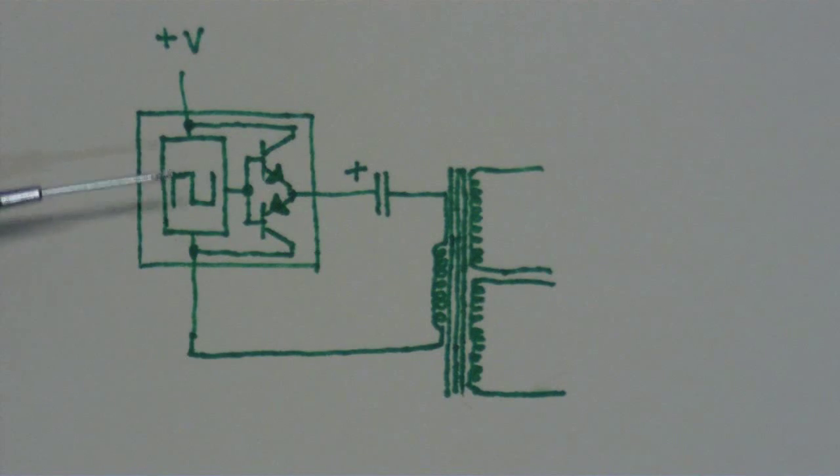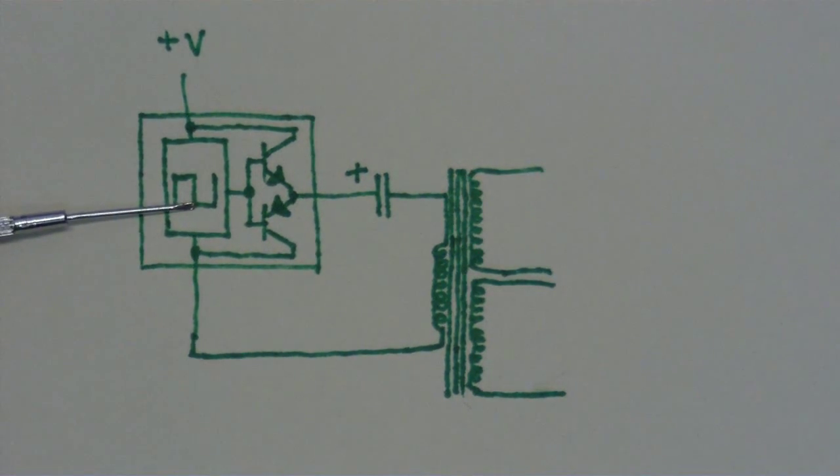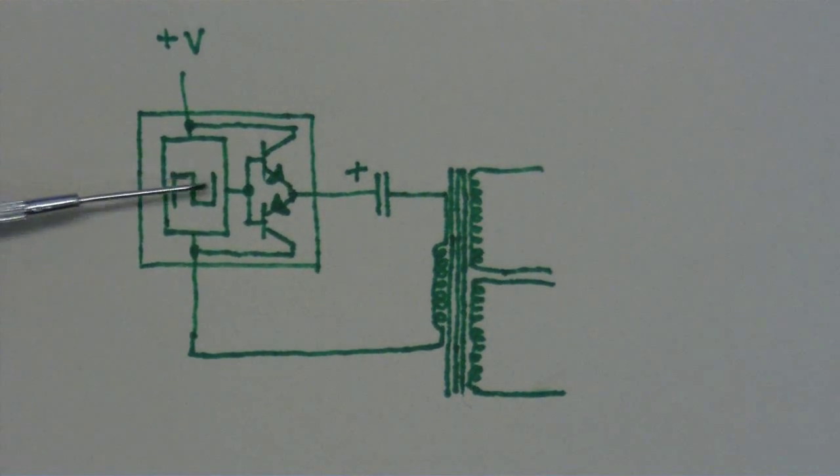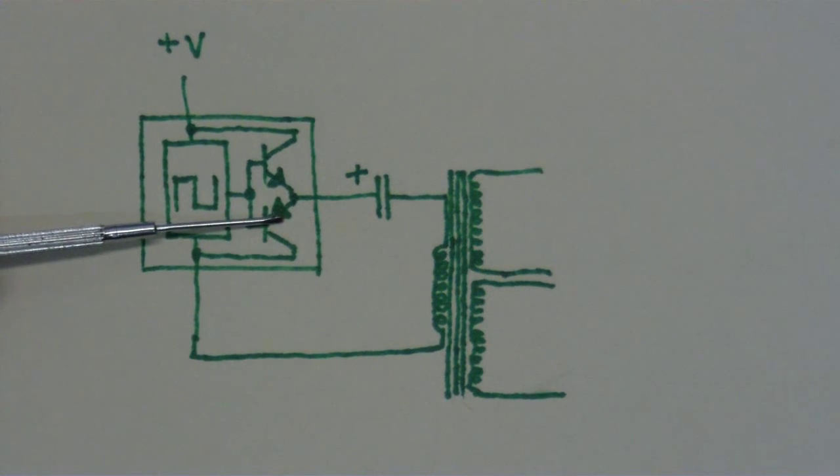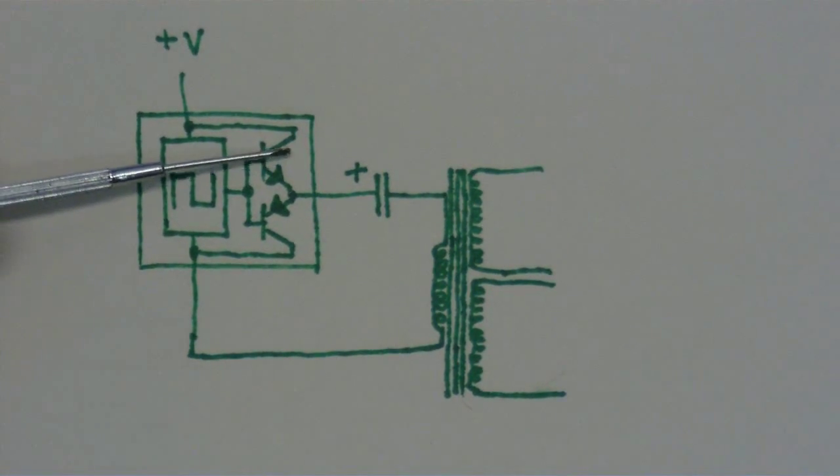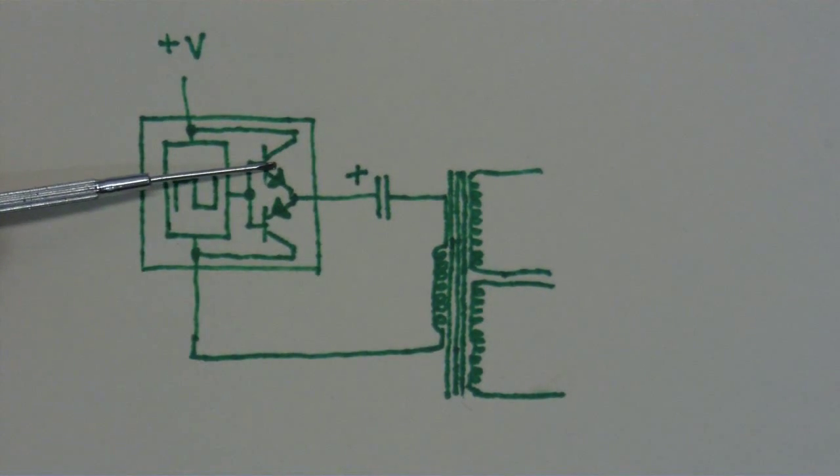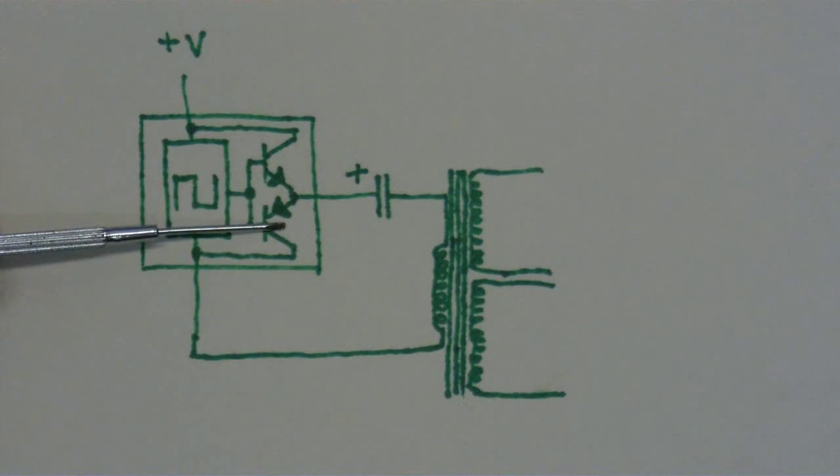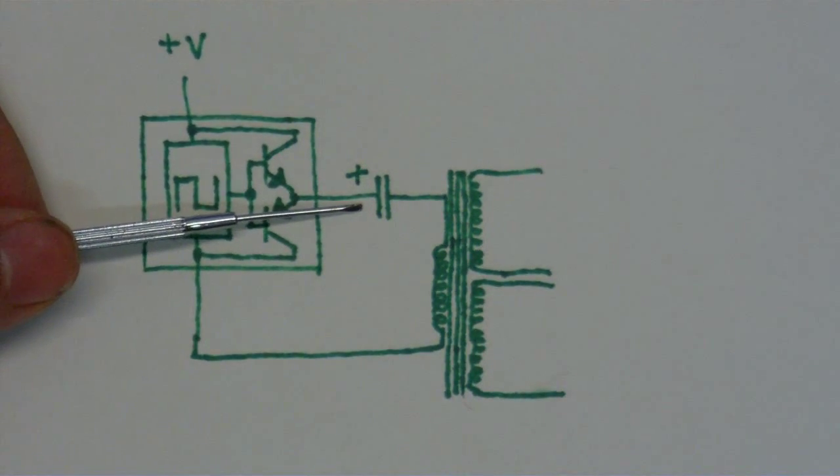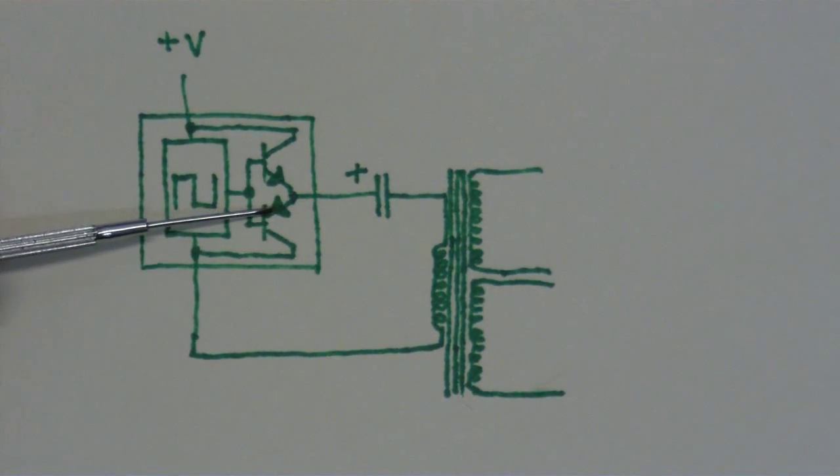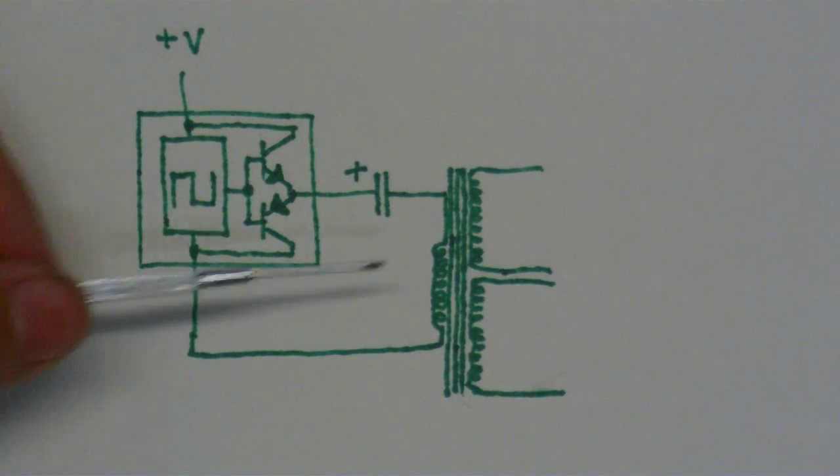Now, when the pulse generator is not outputting anything, we see exactly the opposite happening. This transistor turns on and this transistor turns off. So this one is like the switch that's closed and this one is like, sorry, this one is now like the switch that's open, and this one is like the switch that's closed. And the capacitor can discharge itself through this transistor, and as it does so, we get another pulse in the coil.